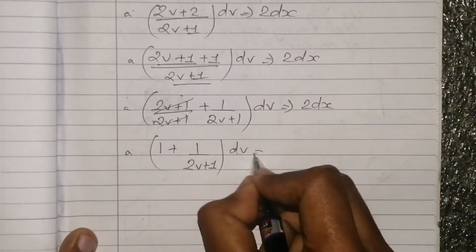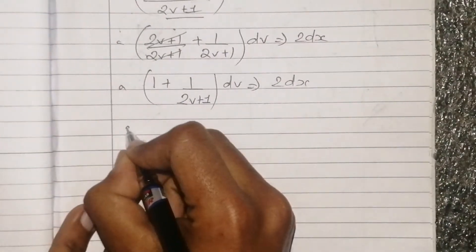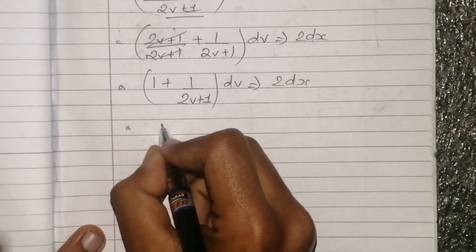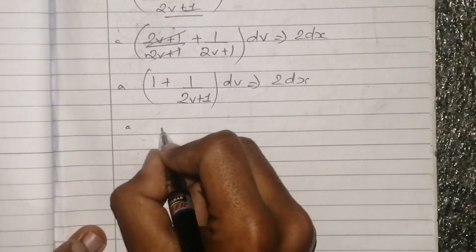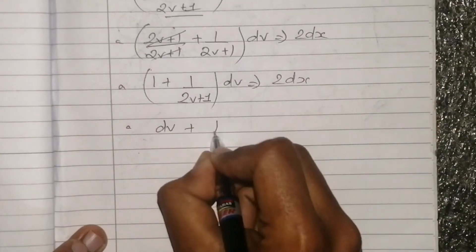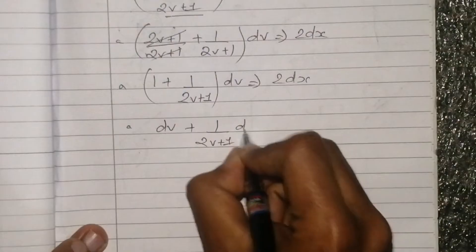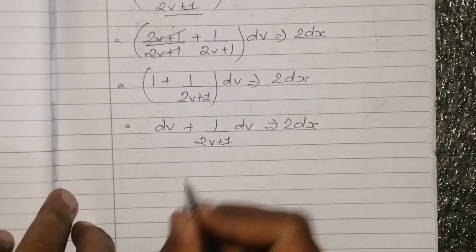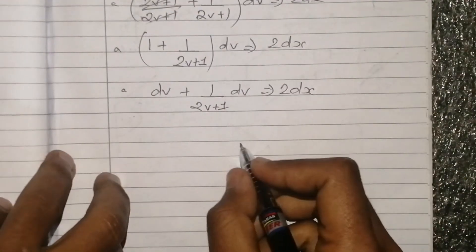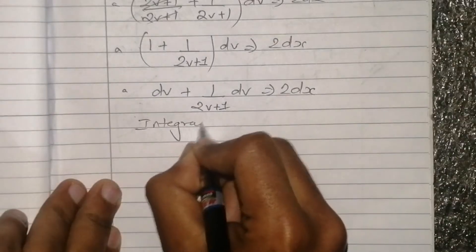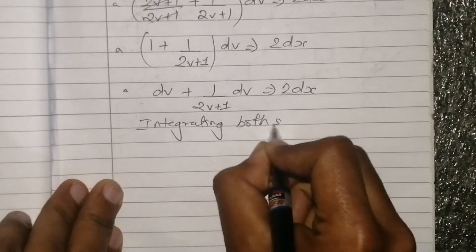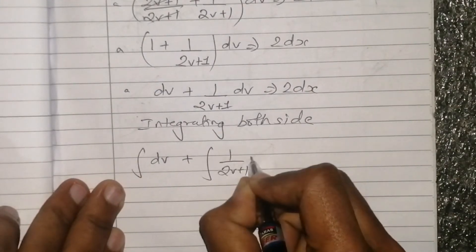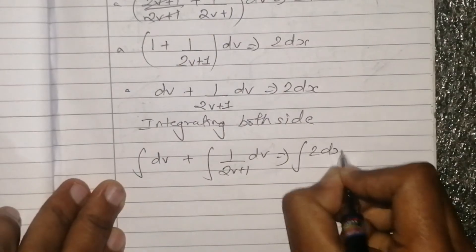So we have dv plus 1/(2v + 1) dv is equal to 2 dx. Now integrating both sides: integral of dv plus integral of 1/(2v + 1) dv is equal to integral of 2 dx.